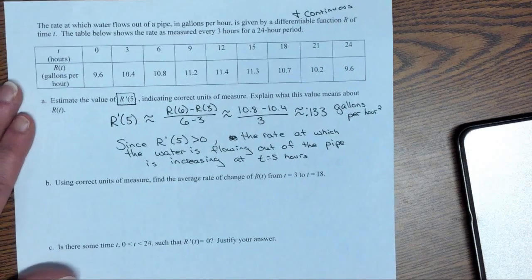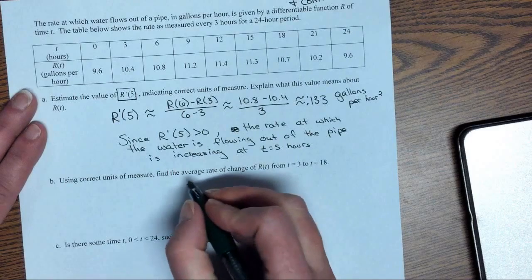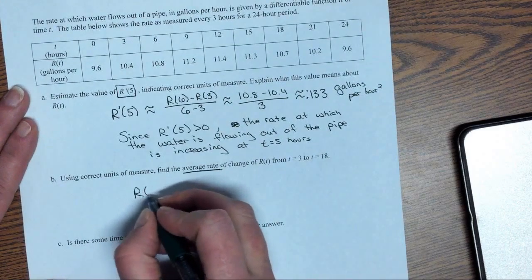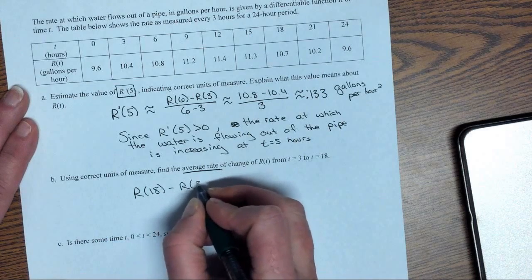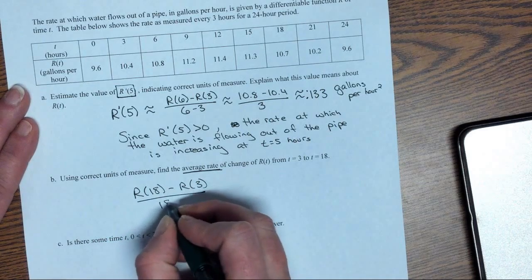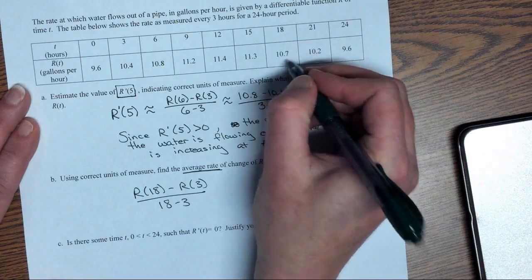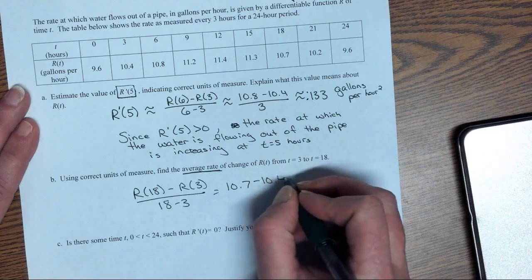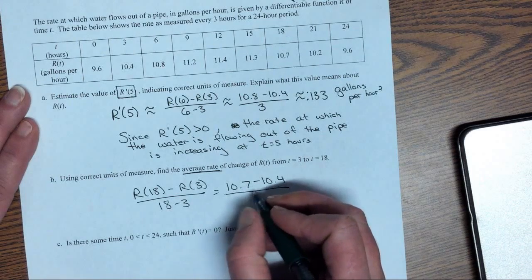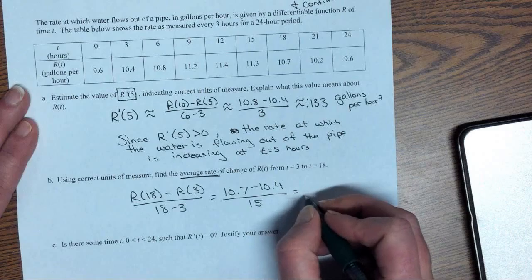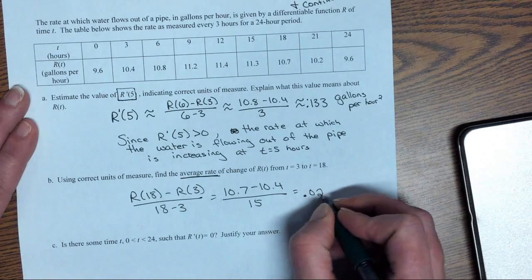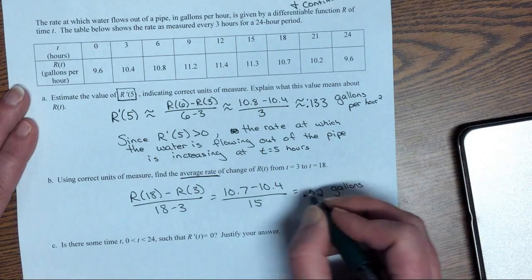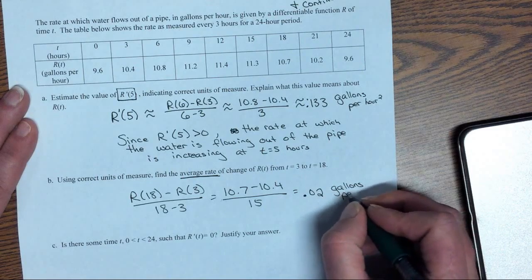Now, let's find the average rate of change from t equals 3 to t equals 18. Average rate, think secant line. So we're just finding slope. 18 gives us 10.7, 3 gives 10.4, over 15, and this gives me 0.02. Again, we have gallons per hour divided by hours, so gallons per hour squared.